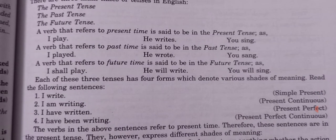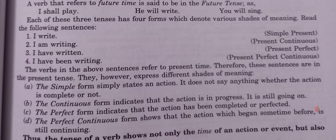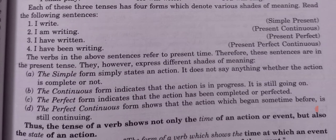Each of these three tenses has four forms which denote various shades of meaning. Number one: 'I write' — simple present. Number two: 'I am writing' — present continuous. Number three: 'I have written' — present perfect. Number four: 'I have been writing' — present perfect continuous. Present, past, and future each have four forms: simple, continuous, perfect, and perfect continuous.